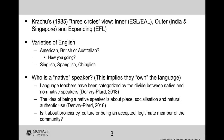Kachru talks about the three circles view. He talks about the inner countries that speak English, where the main language is English, and then students who don't speak English learn it as English as a second language or English as an additional language. Interestingly, in Australia, we've moved away from English as a second language to English as an additional language. A big reason for that is it's acknowledging that students may have a variety of languages — they may be multilingual. So it's recognizing multilingualism and bilingualism instead of just saying English is your second language, because there could be several languages that the student actually knows.